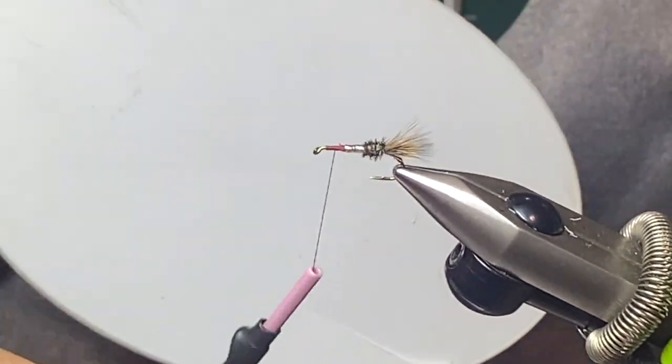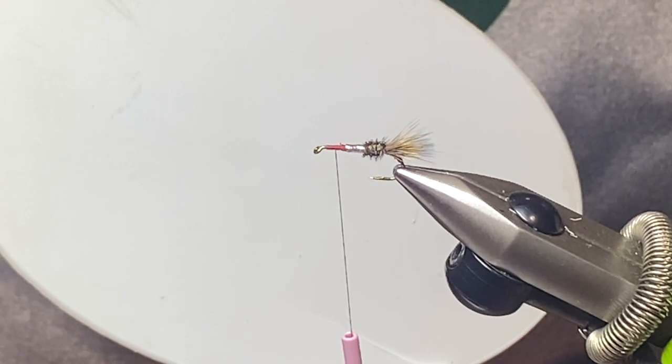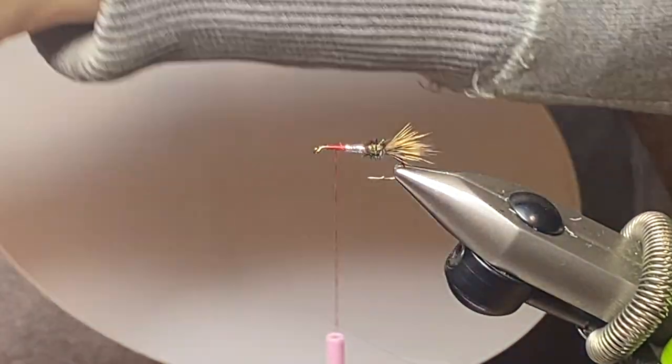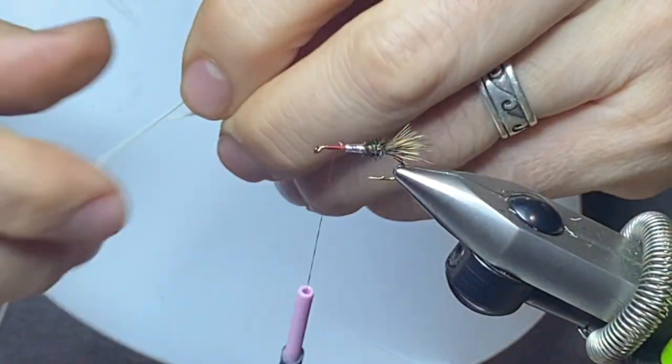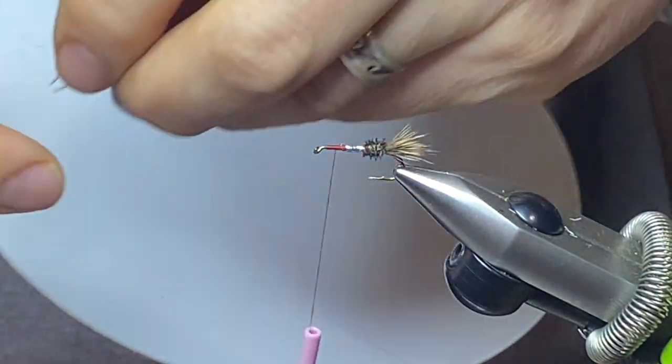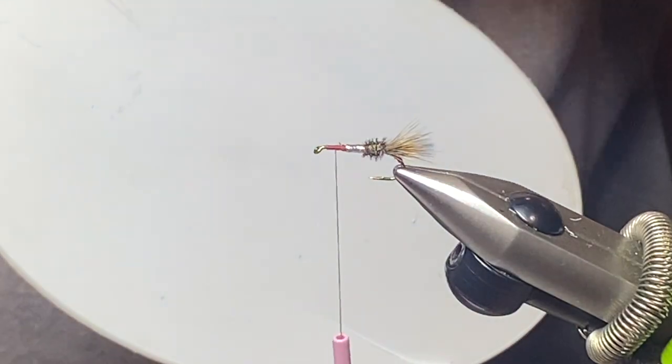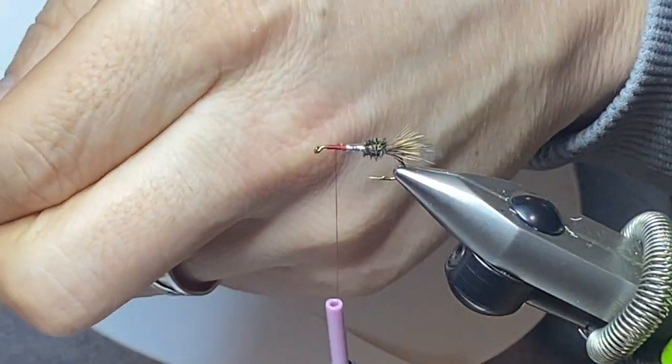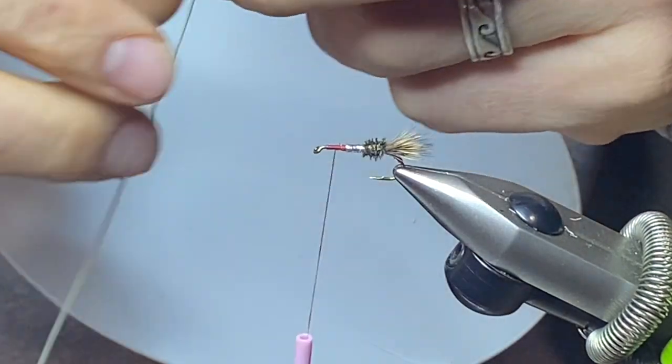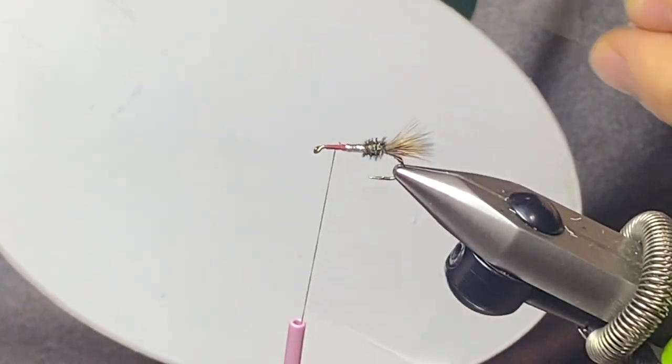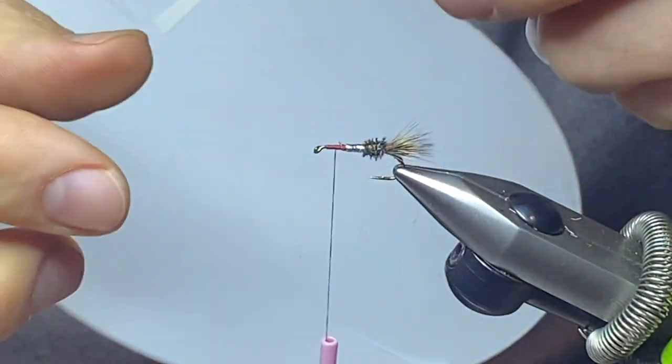Now I'm gonna go ahead and put on the rubber legs. It's just white rubber legs like in the Skunk. Just kind of measure out two of them. A lot of rubber legs come with a little bend, and I try to use that to my advantage. That's where I'm gonna tie them in and I'll trim the shape.